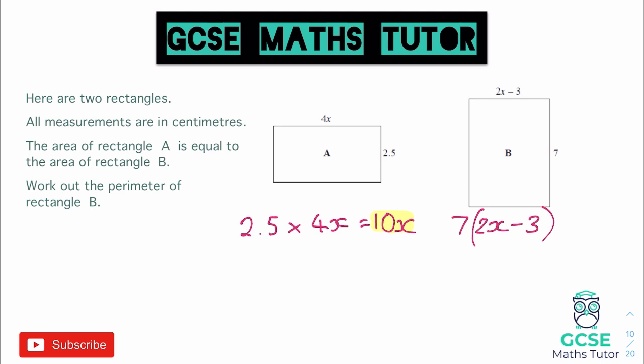So very quickly, I have put it in brackets there because I don't want to forget to multiply the 2X and the negative 3. Okay, if I was just to put 7 times and then 2X minus 3, I might accidentally just times the 2X by 7. I don't want to forget that.